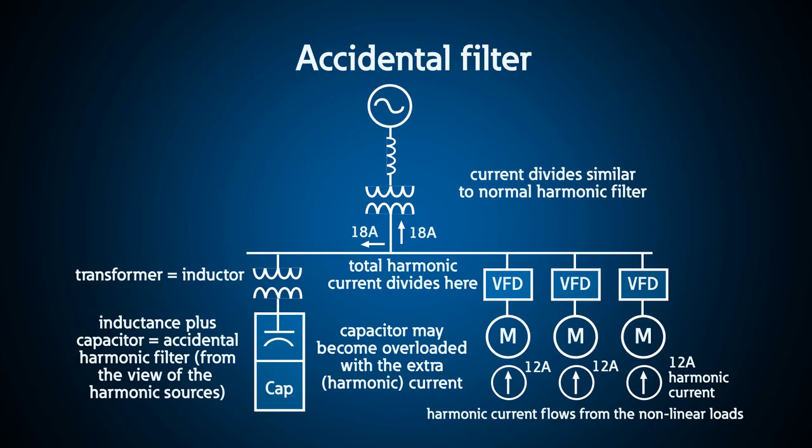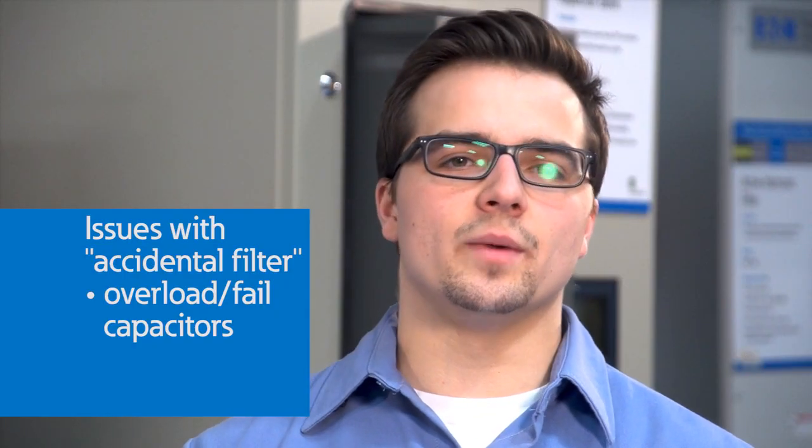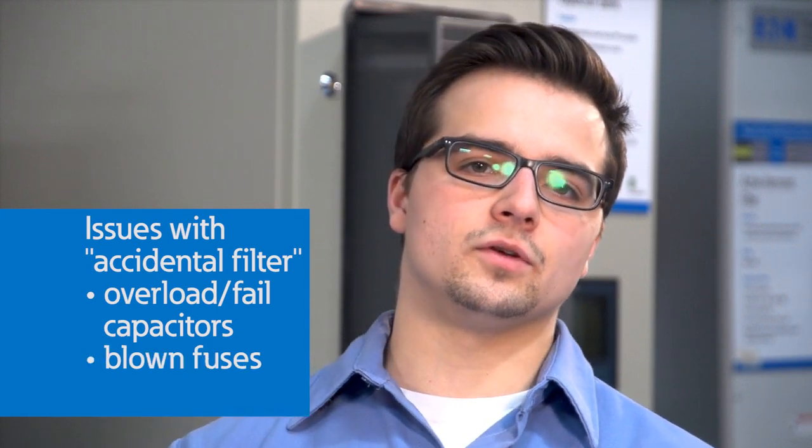When this occurs accidentally — for example, when a transformer and capacitor are in series from the point of view of a harmonic source — we might call this an accidental filter, because you could draw harmonic current into the capacitor from other harmonic loads on the power system. When this occurs, you may overload the capacitor and often blow fuses or trip the breaker feeding the capacitor, so you should take care to understand what might happen any time you apply capacitors.